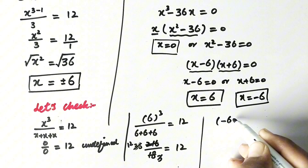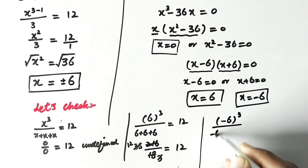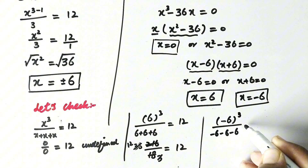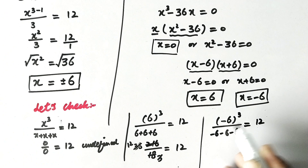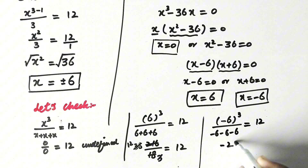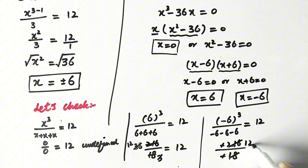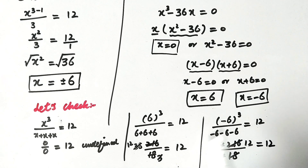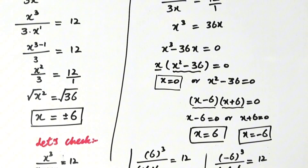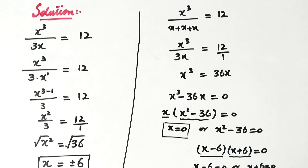When x equals minus 6, it will be minus 6 cubed over minus 6 minus 6 minus 6, which is equal to minus 216 over minus 18. The negatives cancel, giving 12 equals 12. So the left-hand side equals the right-hand side, verifying that our values of x are the correct answer. I hope you liked the video — please subscribe to my channel for more videos. Thanks for watching, take care, bye!